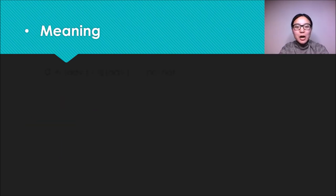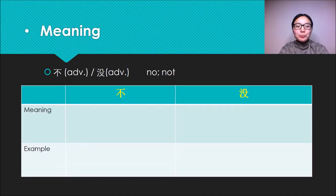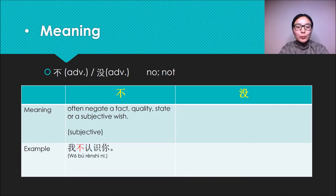In the meaning part, we should know that Bu and Mei are both adverbs in English that can be no or not. Specifically speaking, Bu often negates a fact, quality, state, or a subjective wish. It stresses subjective. For example, I don't know you. In this sentence, the verb to know is subjective, and the whole sentence depends on personal subjective wish.